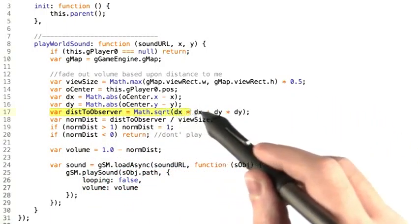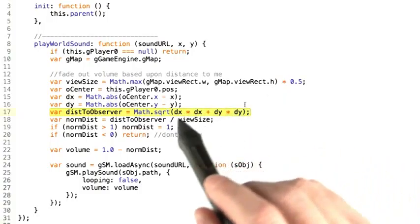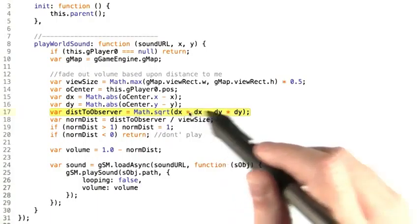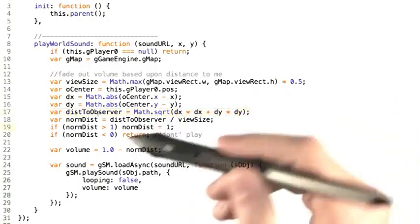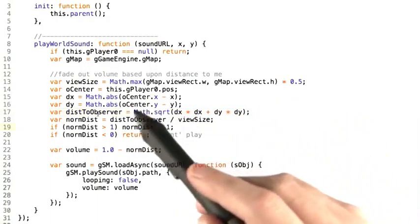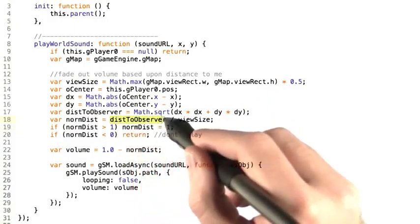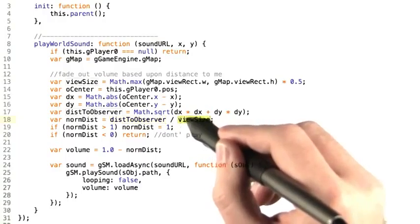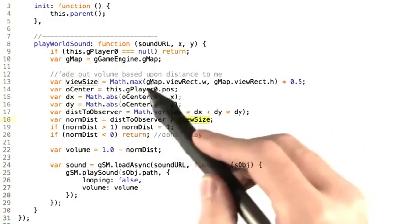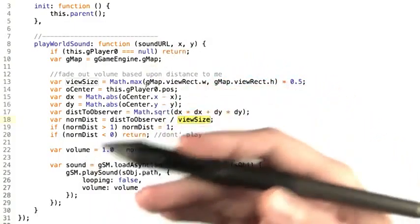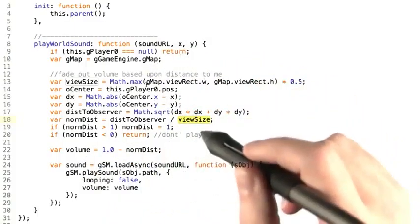which is the same one that you've probably learned in high school, which is the square root of the x distance squared plus the y distance squared. And we're going to normalize that distance. What we mean by that is we're going to take the distance to the observer that we've just calculated, and divide that by the view size that we calculated earlier to see how many view sizes from the player we are.